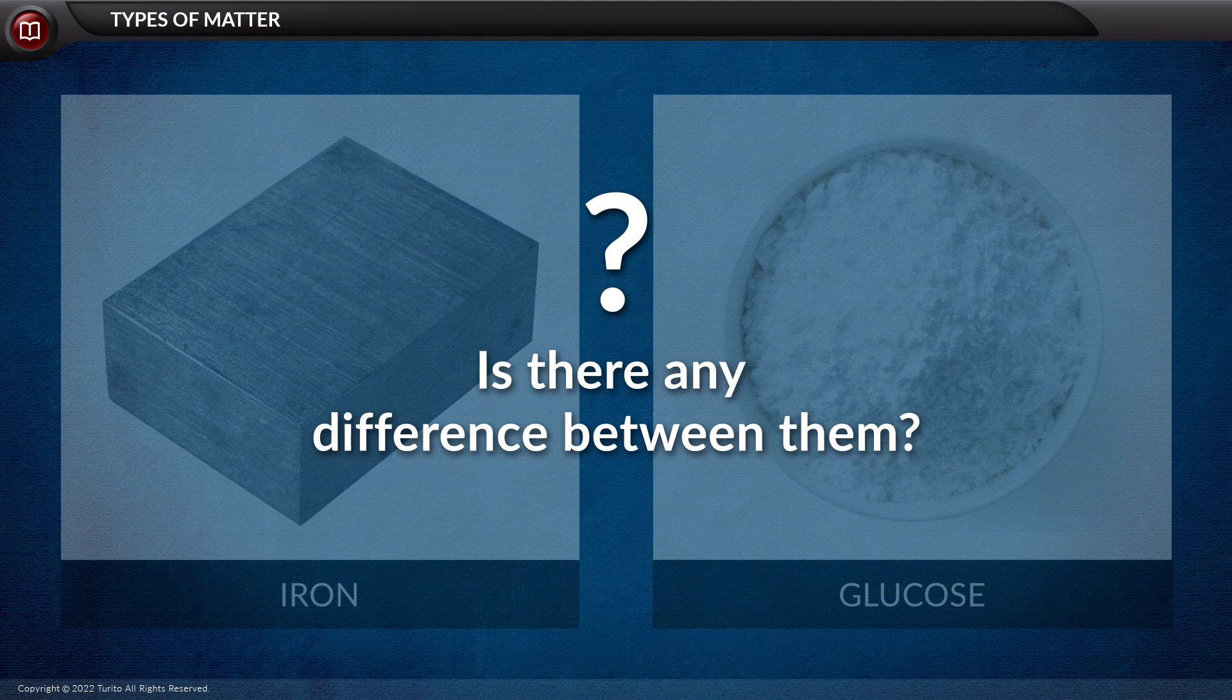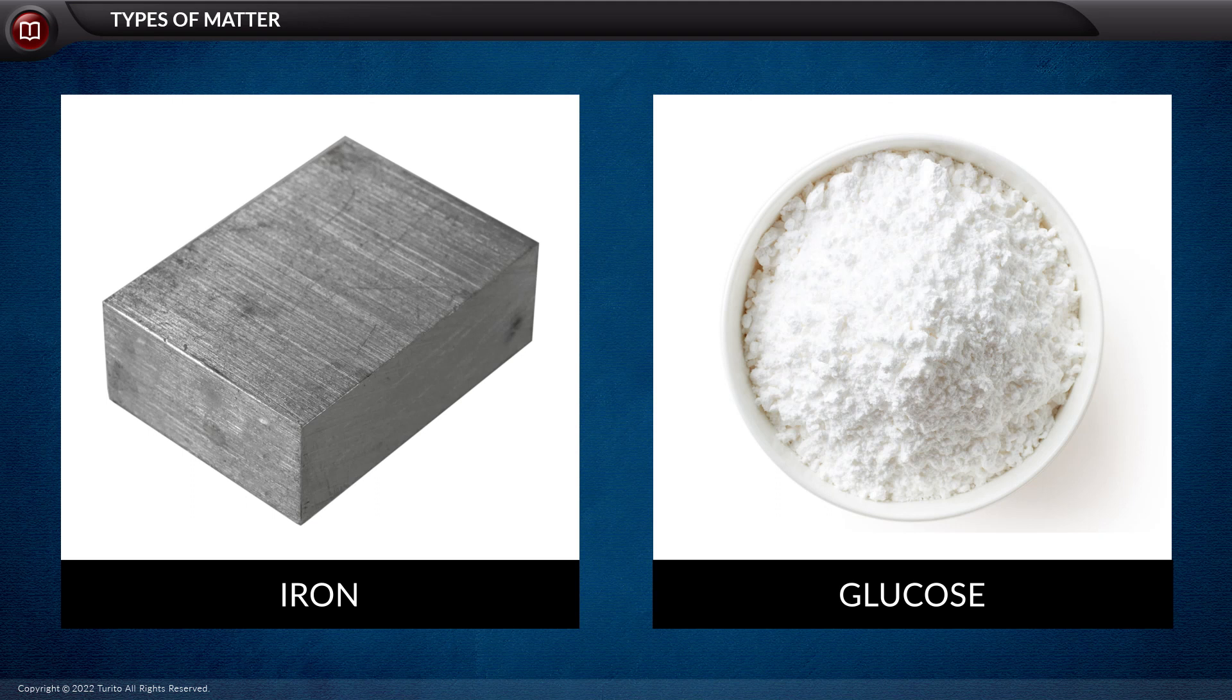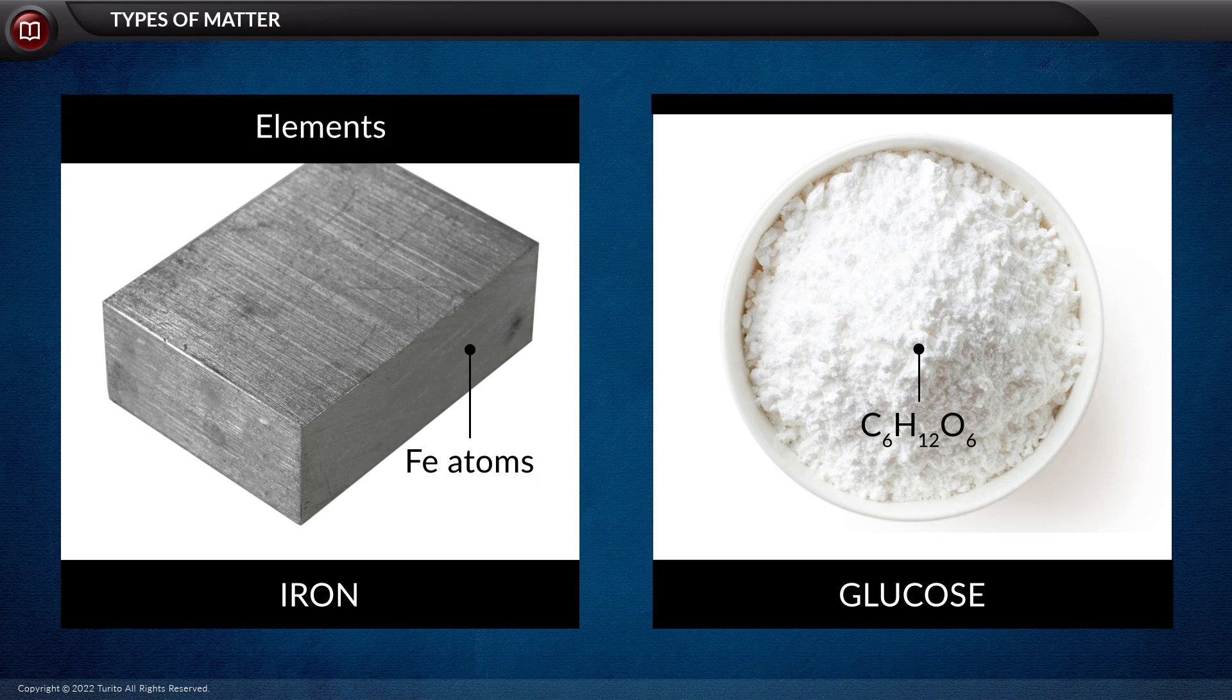To answer this question, let us see their chemical composition first. An iron block is made up of only iron or Fe atoms, while glucose is made by a chemical combination of carbon, hydrogen, as well as oxygen. Thus, we classify iron under elements while glucose is a compound.